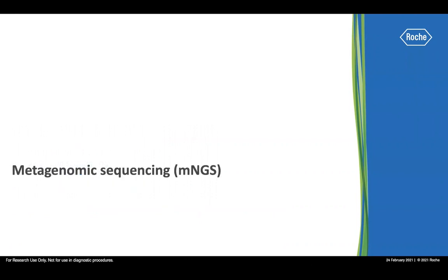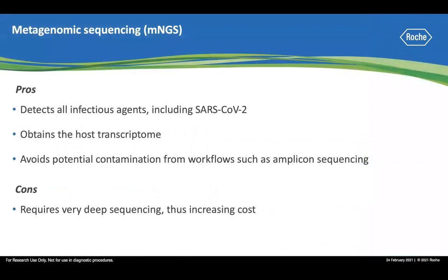The first measure I want to talk about is metagenomic sequencing, which is capable of detecting all infectious agents including SARS-CoV-2. It also allows one to obtain the host transcriptome. This measure avoids potential contamination from workflows such as amplicon sequencing. It also has the simplest workflow among all measures currently being used for SARS-CoV-2 sequencing. The con is that it requires very deep sequencing, and therefore has increased sequencing costs.